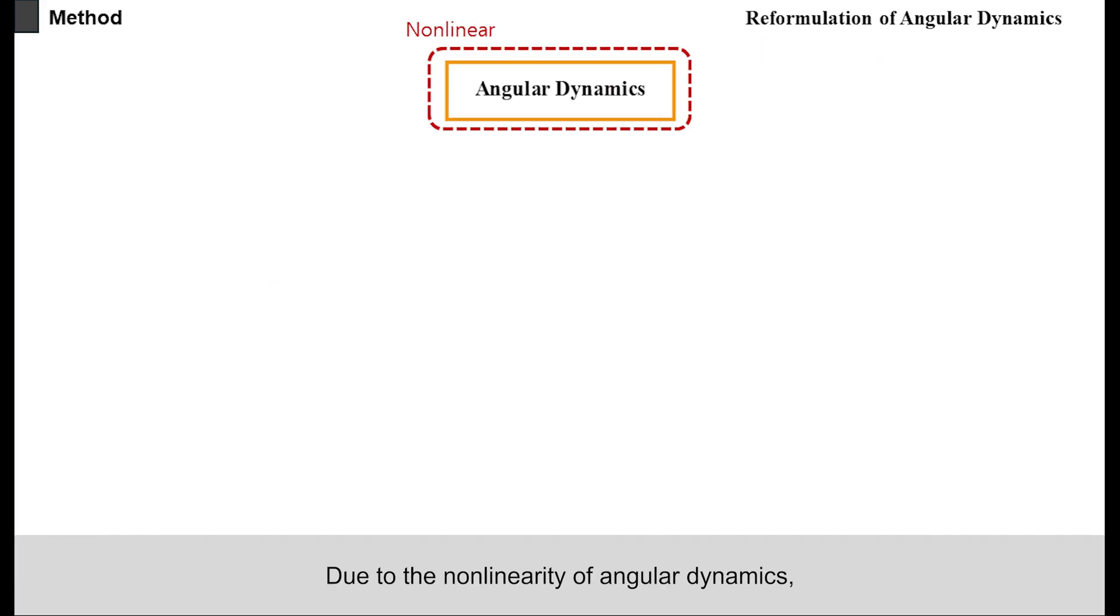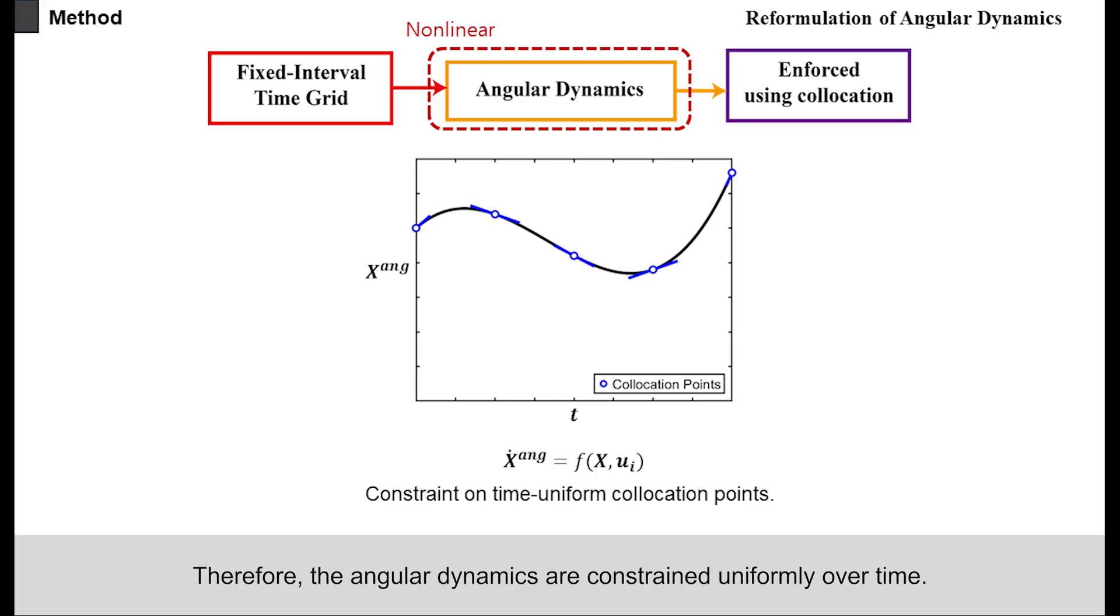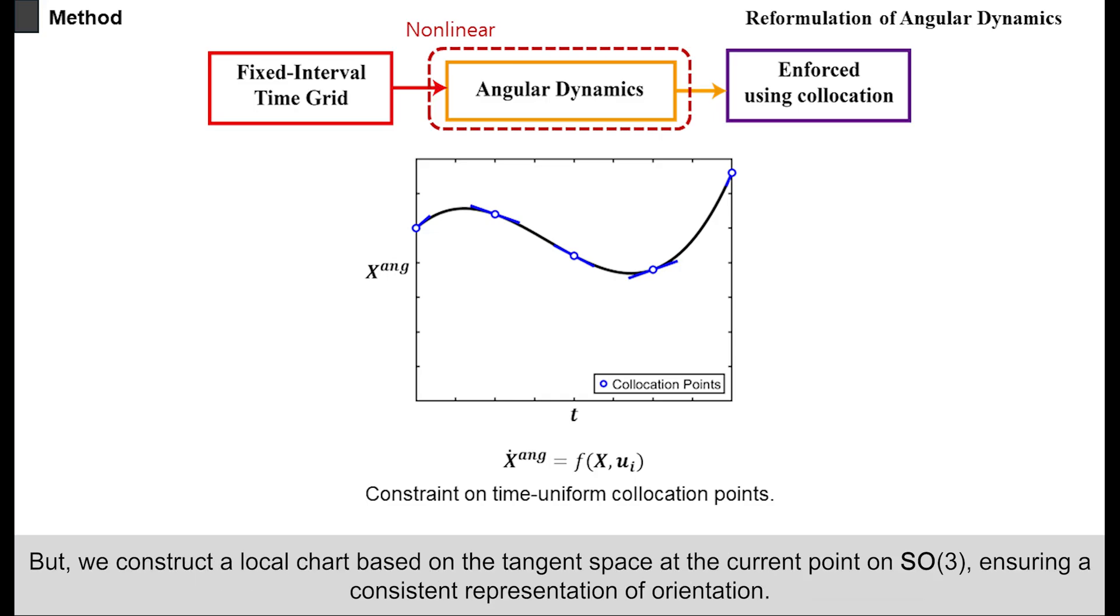Due to the non-linearity of angular dynamics, superposition of solutions is not applicable and the constraint points cannot be adjusted. Therefore, the angular dynamics are constrained uniformly over time, but we construct a local chart based on the tangent space at the current point on SO3, ensuring a consistent representation of orientation.